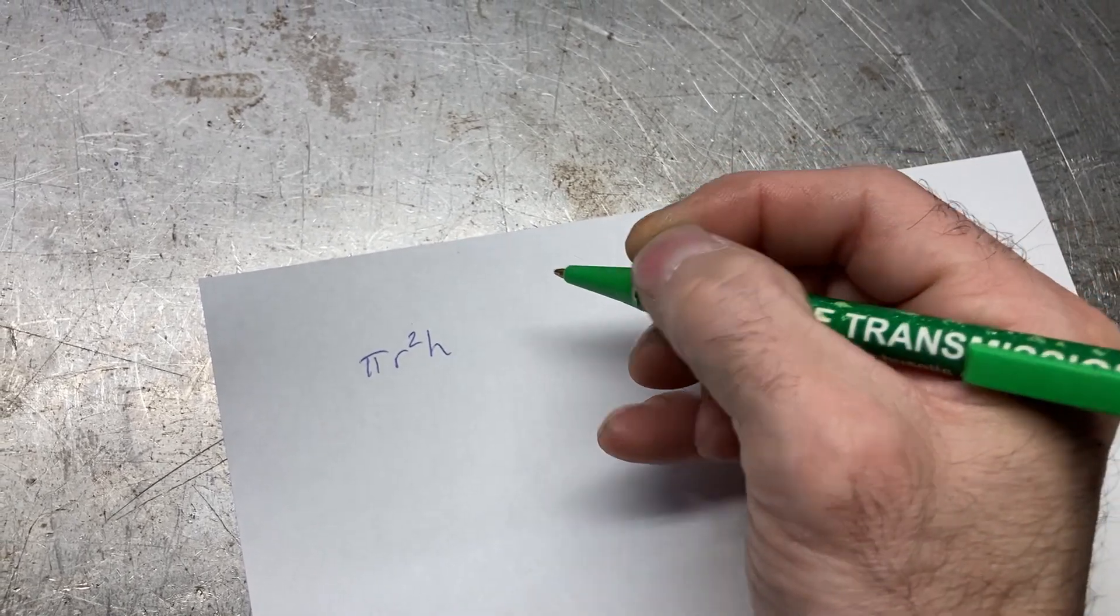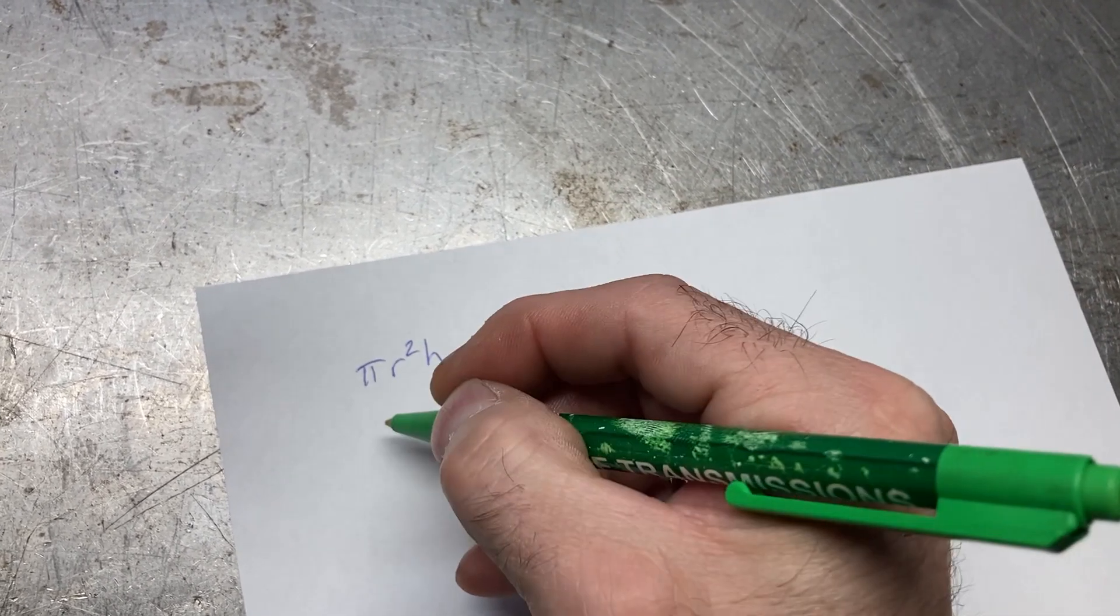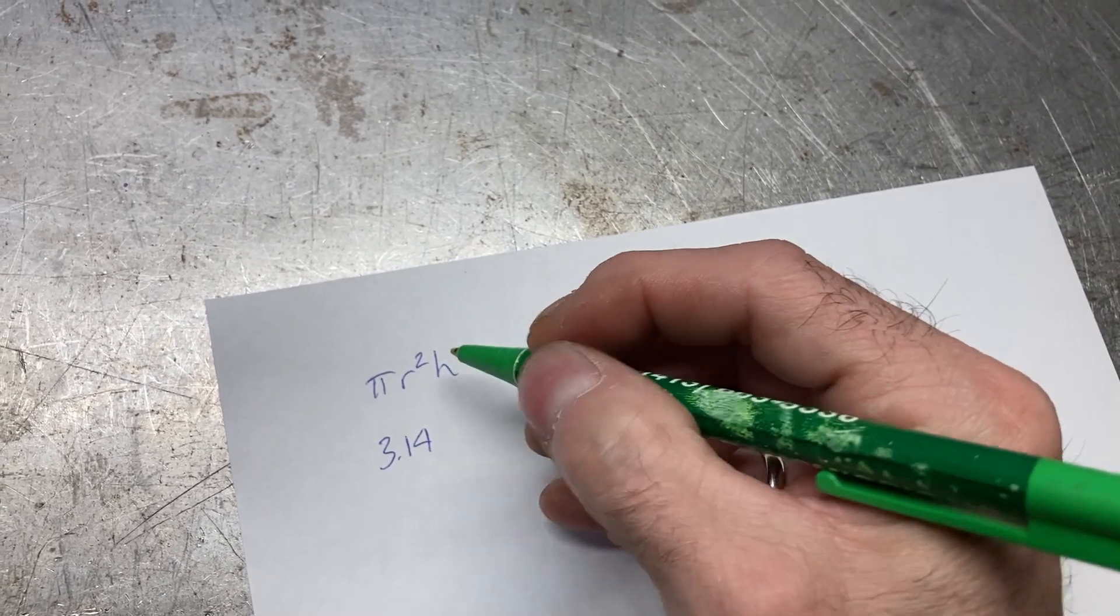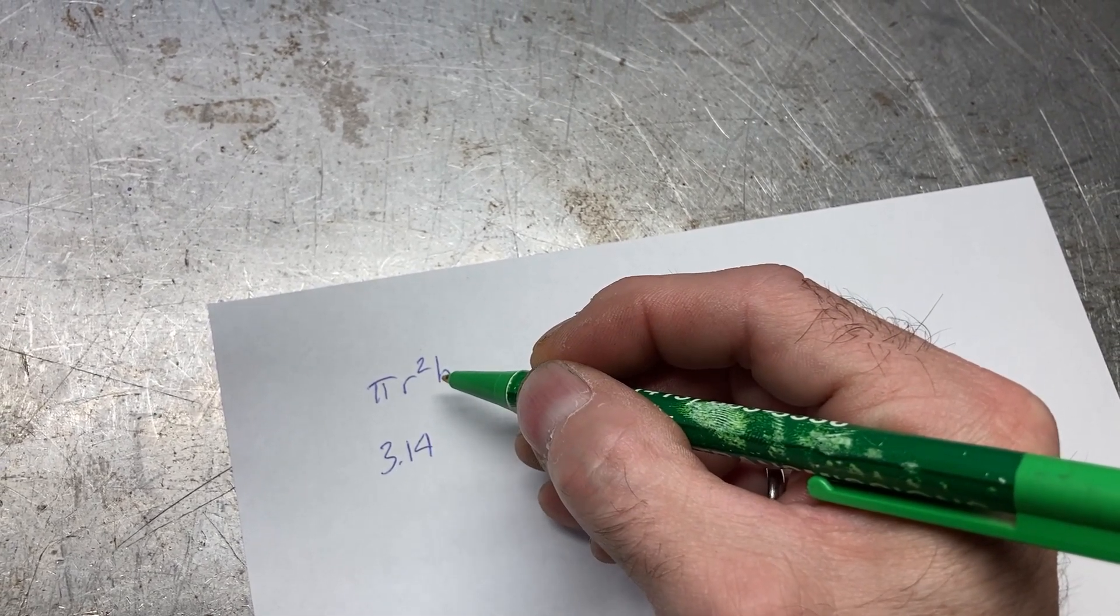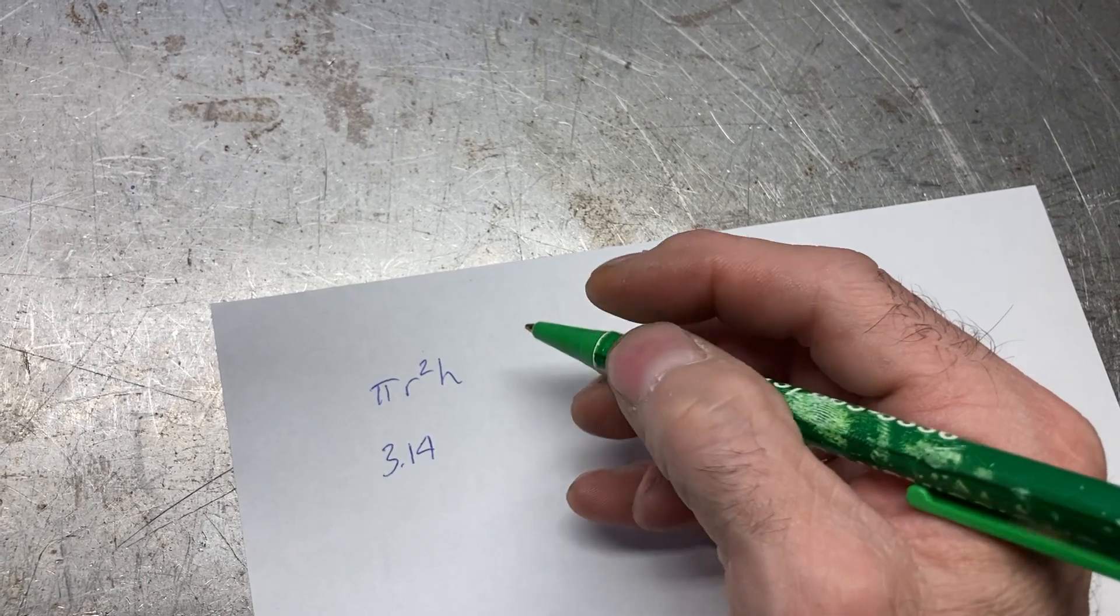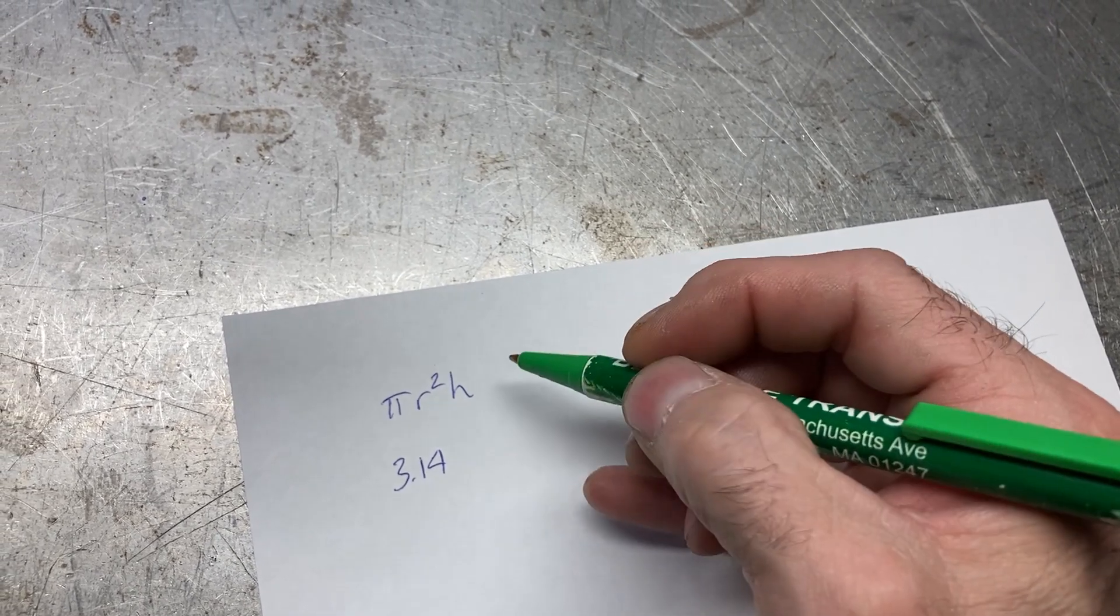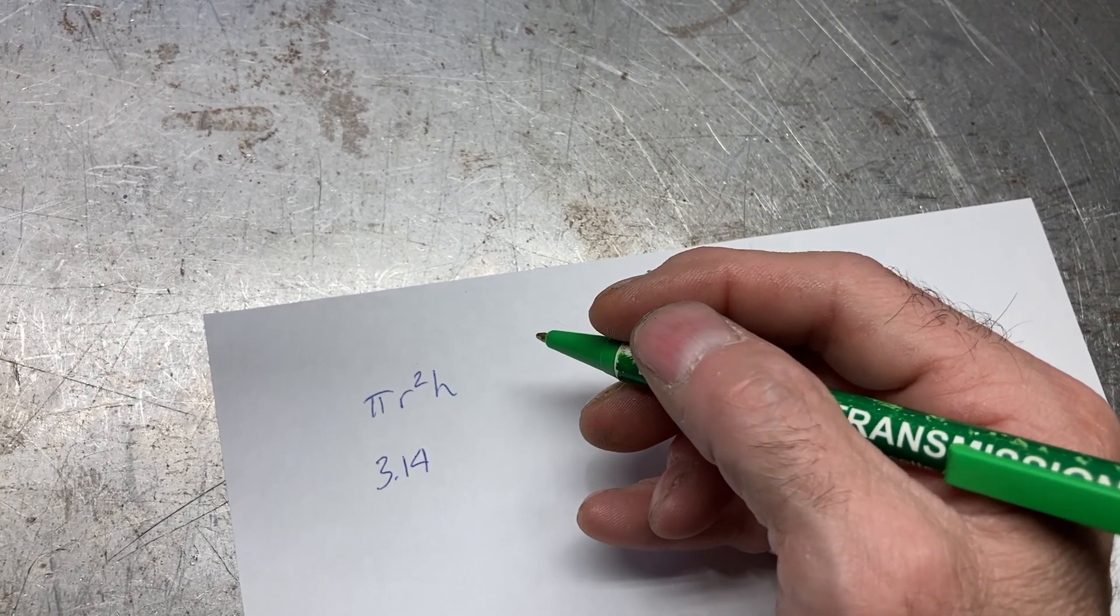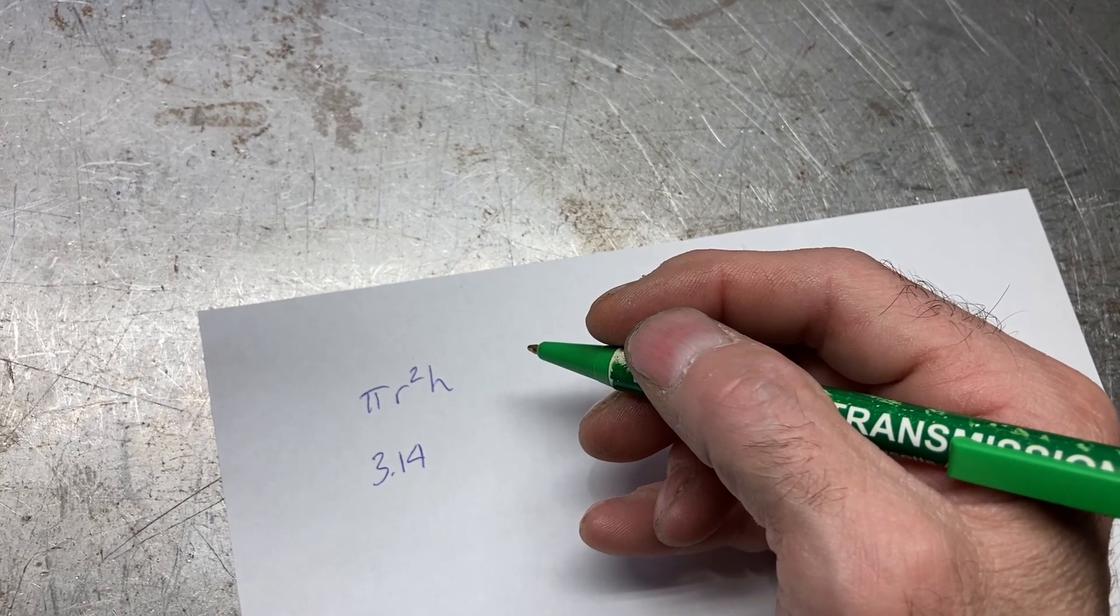Pi is represented by 3.14, the radius is half of the bore size of your engine, and h in this case would be the stroke. Recently we've been working on a 427 medium riser FE engine. It has a 4.250 inch bore size and a 3.78 inch stroke.